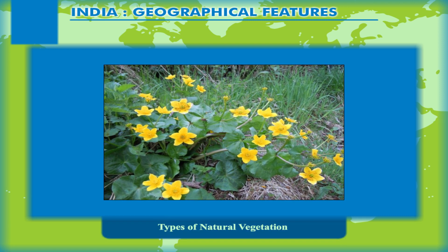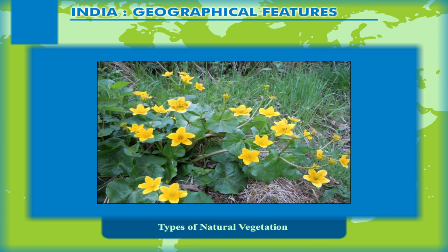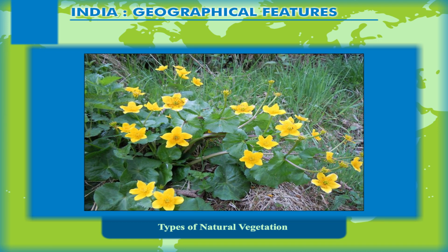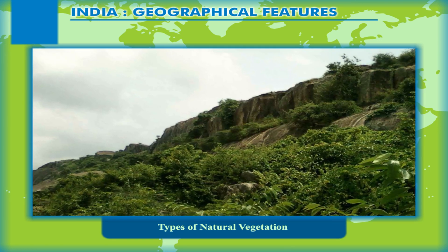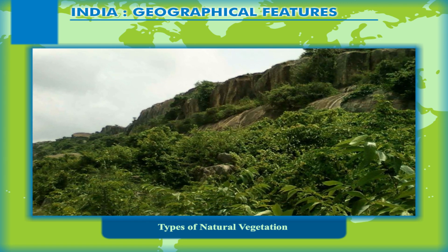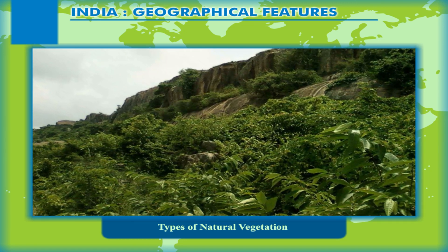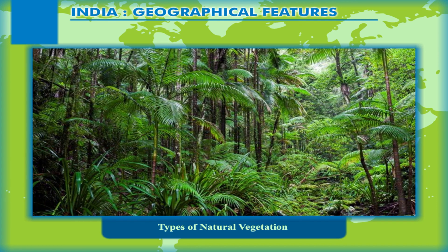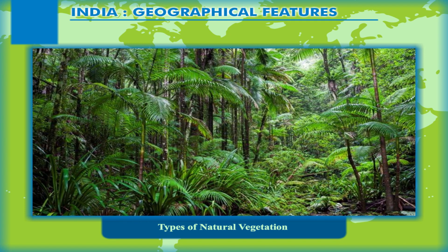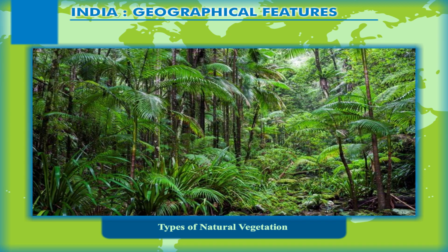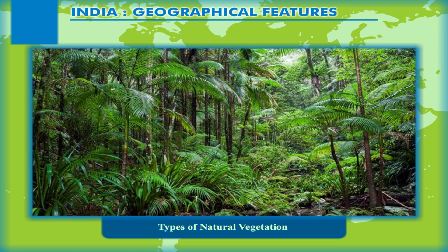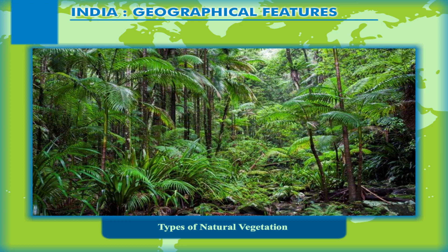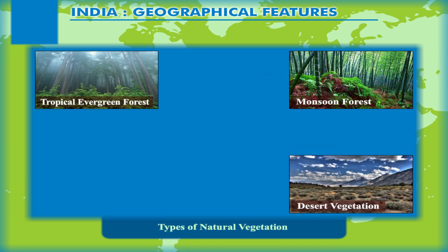Types of Natural Vegetation. The flora or vegetation cover found in all parts of the country is greatly influenced by the physical landscape and the climatic conditions, especially rainfall. Vegetation cover ranges from the dense evergreen forests to xerophytes and scrub vegetation depending on the amount of rainfall occurring in the region. The vegetational cover is broadly classified into these types.